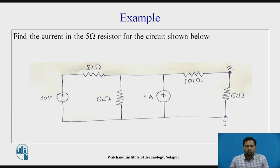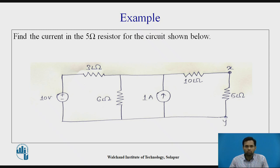Now we will see one example related to Norton's theorem to understand how it works. Find the current in the 5 ohm resistor of the circuit shown. In the circuit, there are two independent sources: one is a voltage source of 10 volts, another is a current source of 1 ampere, and there is a 5 ohm resistor. We have to find out the current flowing through this 5 ohm resistor.